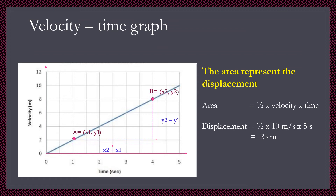The area under a velocity-time graph represents the displacement. Since this graph shows uniform acceleration, the area is measured using the formula for a triangle: half multiplied by velocity and time. The displacement of this velocity-time graph is 25 meters.